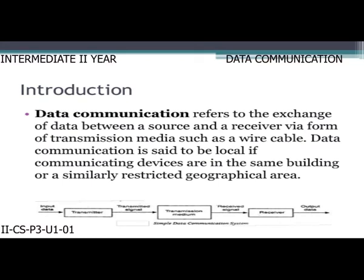What is data communication? The word 'data communication' is a combination of data and communication. Communication is a process of exchanging information from one point to another. If it is in the form of data or bits, it is called data communication. Data communication refers to the exchange of data between a source and a receiver via a transmission medium such as a wire cable.